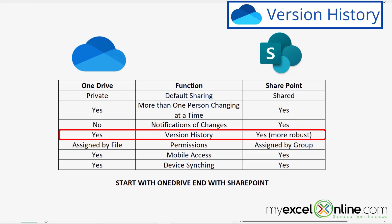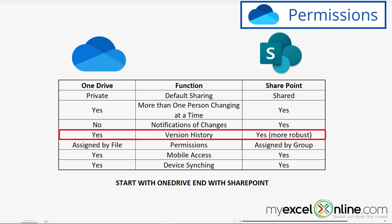The next task, which we touched on in the introduction to OneDrive, is version history. Both OneDrive and SharePoint have version history, but SharePoint's version history is a little more robust because it deals with changes made by multiple users at multiple times. So they both allow for version history, but one is a little stronger than the other.